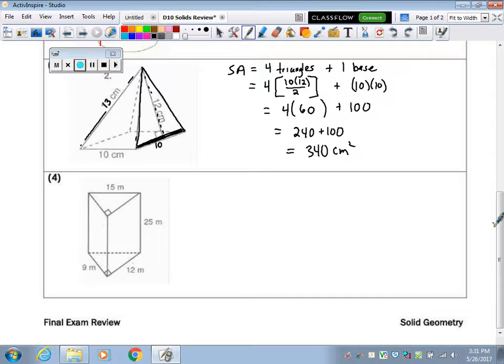Alright, a prism. Prisms are the hardest ones. I left it until last. The surface area of a prism. There's no formula. What we wrote down on our card was, add up all the areas of all the faces and bases. So this is a triangular prism.